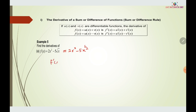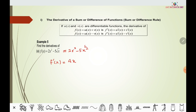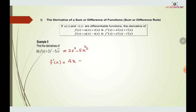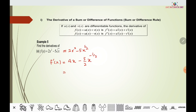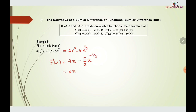We differentiate f(x): 2 times 2 equals 4, and x power 2 minus 1 gives x^1. Then minus 5 times 1/2 gives 5/2, and x^(1/2 - 1) gives x^(-1/2). Because the power is negative we bring it to the denominator, so the answer is f'(x) = 4x minus 5/(2√x).